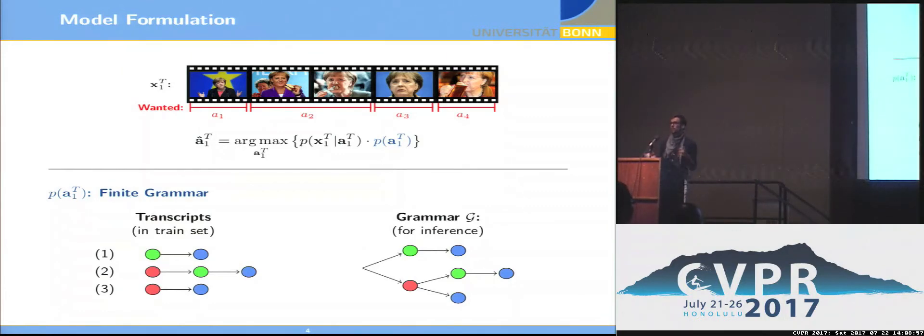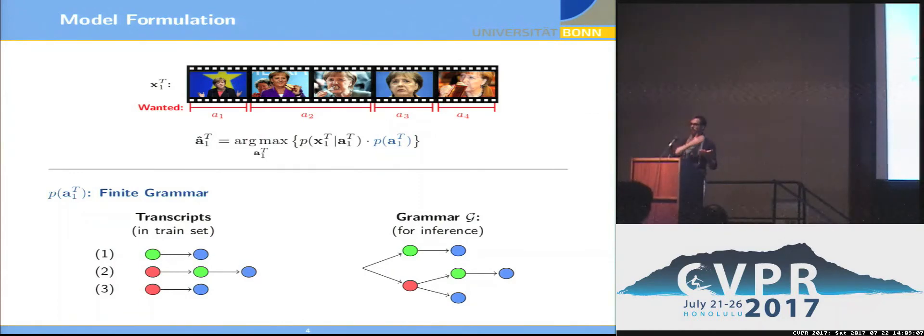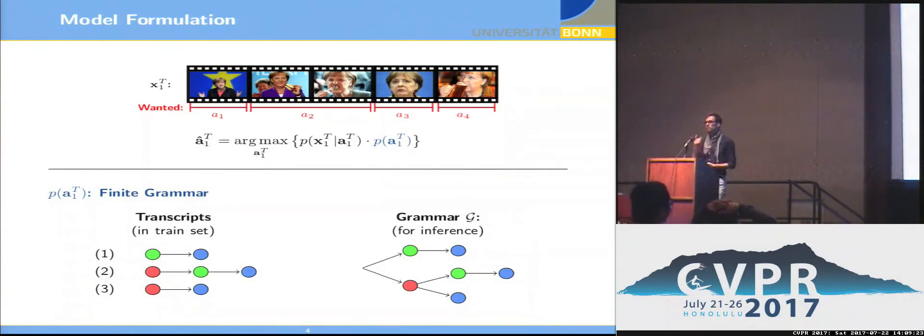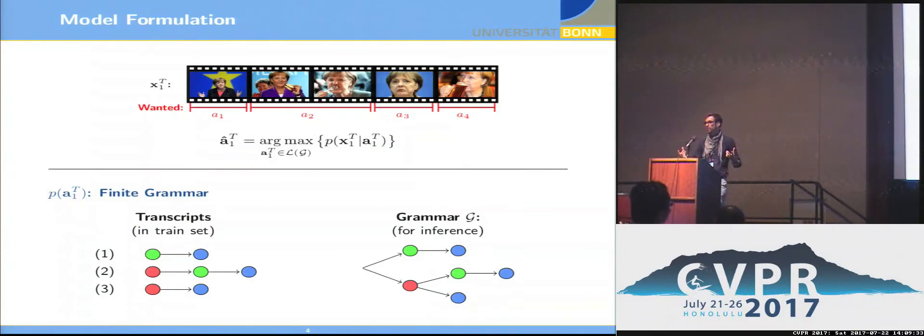And how does this look like exactly? In training, we already know the ordered action sequences. So we know we have, for example, for the first training video, green action followed by blue action. For the second video, red action followed by green action followed by blue action and so on. But for the testing or for the inference, we just have the video itself, so we need to construct a grammar out of the training data. We use a very simple approach here and just add all the paths that we see during training to our grammar. And if we now assign a constant probability to each of these paths, then actually this prior factor cancels if we maximize only over those paths that are generated by the grammar.